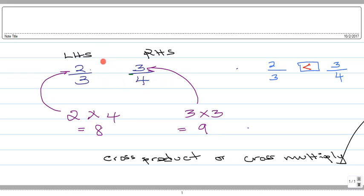Then we find whatever that is. So if we have two, we're going to multiply it by four, and here we have two times four, that would give us eight. That's a cross product for the left hand side.